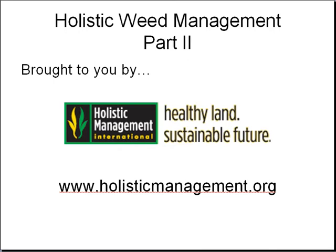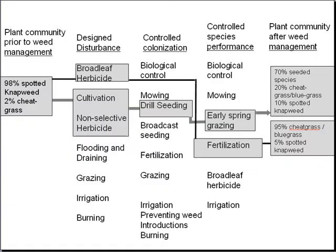Let's take a look at this model in action. In this example, two experimental treatments were applied to gauge their effectiveness. The plant community prior to weed management was 98% spotted knapweed and 2% cheatgrass. The managers applied two different treatments and got two very different results. In the design disturbance category, they applied a broadleaf herbicide for the first treatment, and the second treatment included cultivation and a non-selective herbicide.